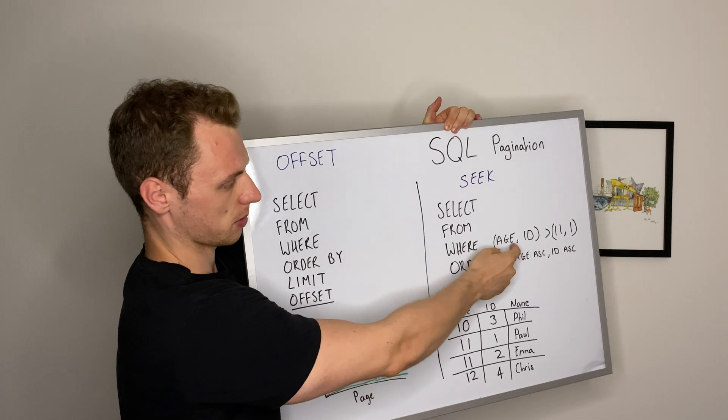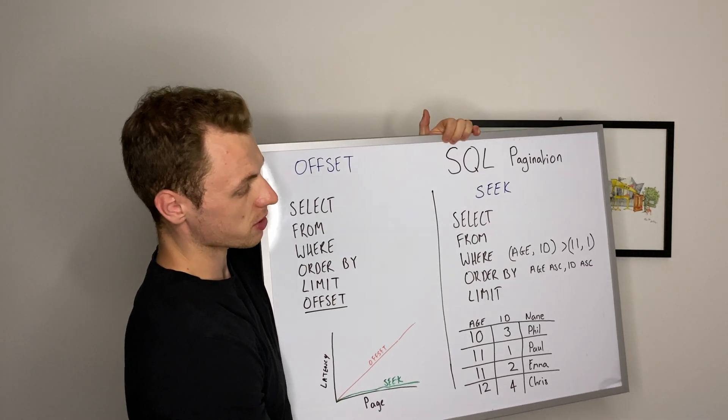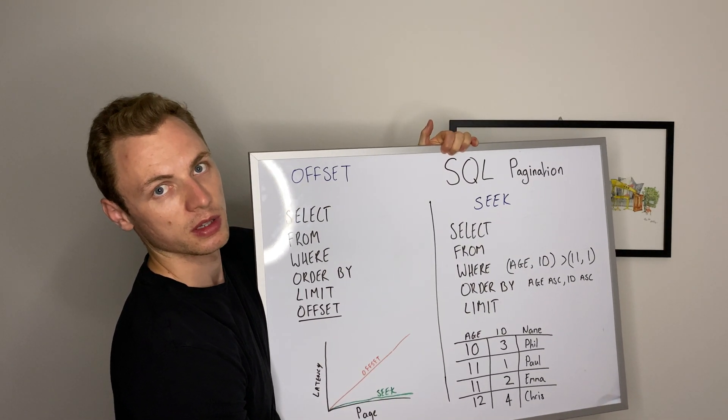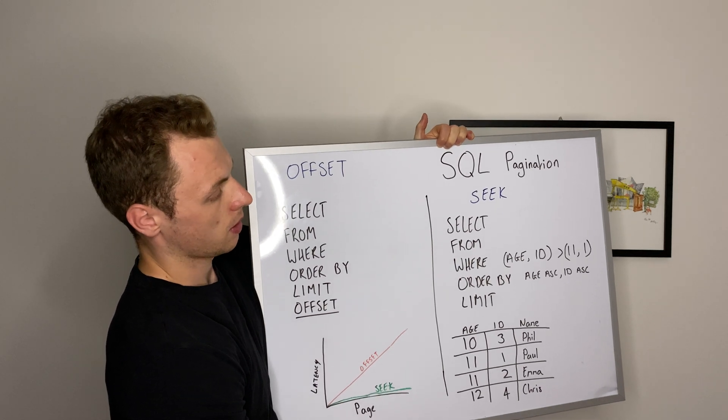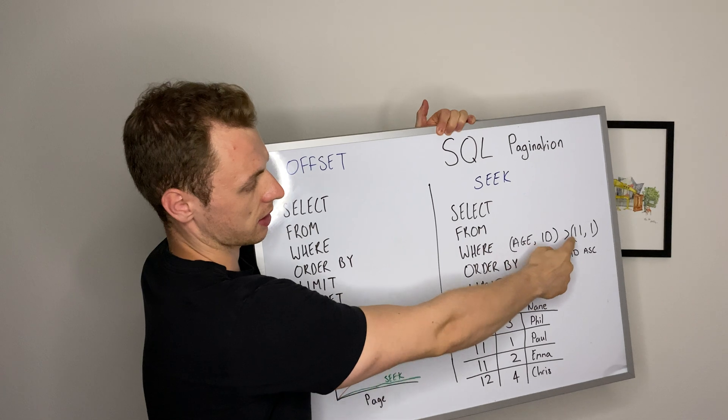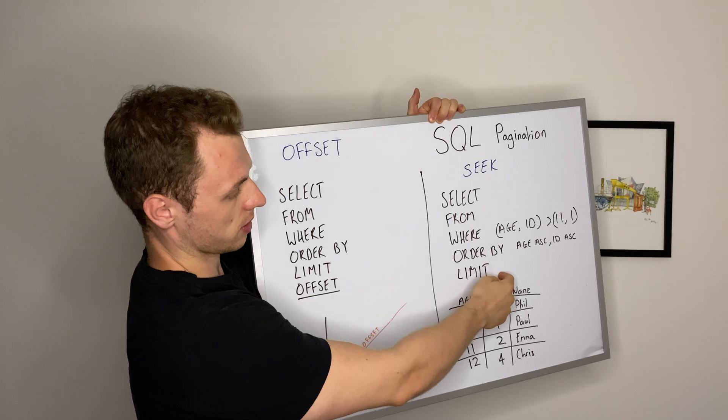So order by age, and this is where people, some people might get it wrong. You must include a unique identifier of the table in that SQL clause, in that offset. And why? Because say if you don't have ID, it's just age, say if limit is 2 here...